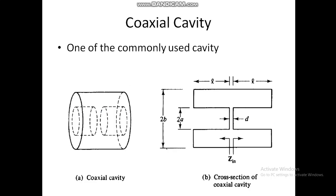The coaxial cavity is mostly used among them. This is the basic coaxial cavity, and this is the cross-sectional view of the coaxial cavity. In this, the inductance is reduced to a minimum by a short wire. Therefore, re-entrant cavities are designed for use in klystrons and microwave triodes.